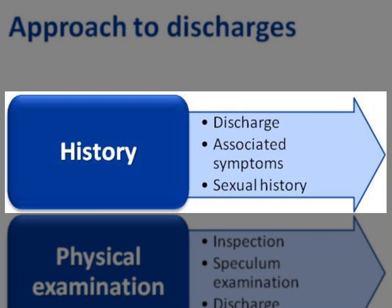A sexual history is used to assess the risk of STIs. Risk factors include age less than 25 years, change of or new sexual partner in the last year, and more than one sexual partner in the last year. Similar symptoms in partners should be covered. Medical history is important as immunocompromised states like diabetes and HIV can predispose to infection. Current and previous medication, menstrual history, and obstetric history should be obtained too.